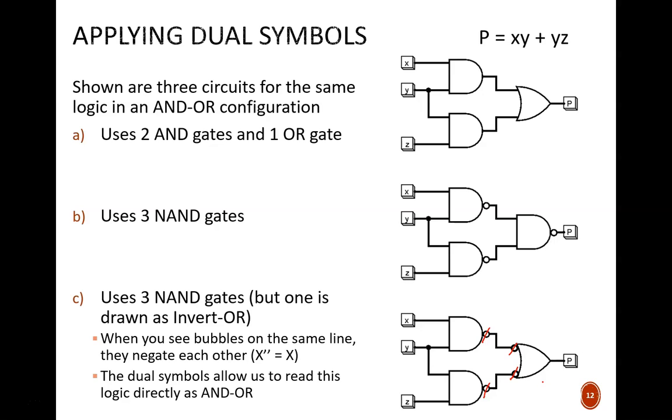Let me emphasize again, these are still all NAND gates. If physically wiring, one NAND chip will be used. The use of the dual symbol and the visual elimination of double bubbles is purely to help us understand the logic more easily.